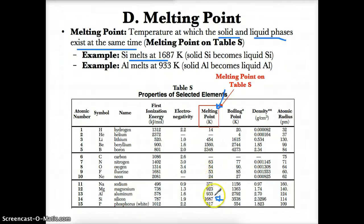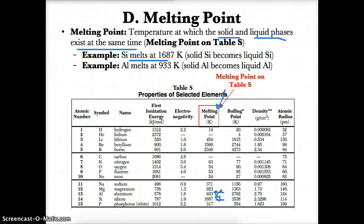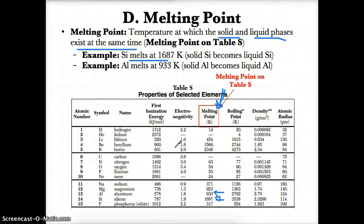Another example is Al. Al has a melting point of 933 Kelvin, so Al melts at 933 Kelvin, meaning solid Al becomes liquid Al at 933 Kelvin. Just look at the melting point column on Table S to find the melting point of any element. Finding melting point is very easy — it's right there on Table S in that column.